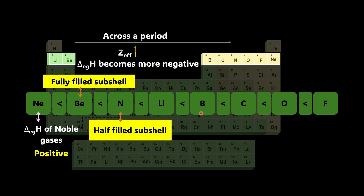Among lithium, boron, carbon, and oxygen, fluorine has the highest negative electron gain enthalpy. This means fluorine relatively wants to accept an electron, and F⁻ is a stable anion.